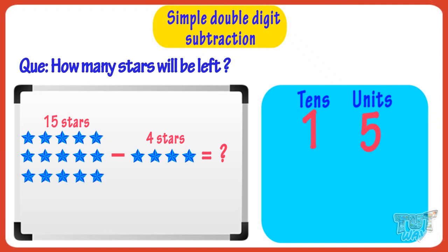Now write the other number, that is 4. 4 is in ones place or units place. So write it below 5. Good!